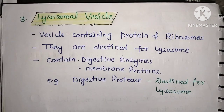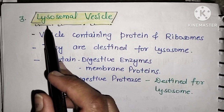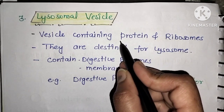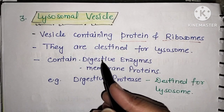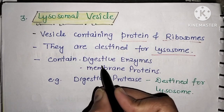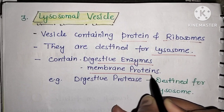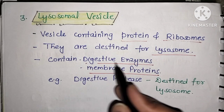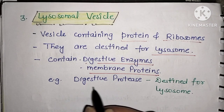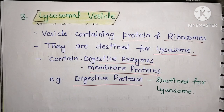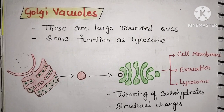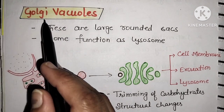The third type of vesicle is the lysosomal vesicle. This vesicle is packed with digestive enzymes and membrane proteins destined for lysosomes. These large round vesicles from the Golgi apparatus are called lysosomes.